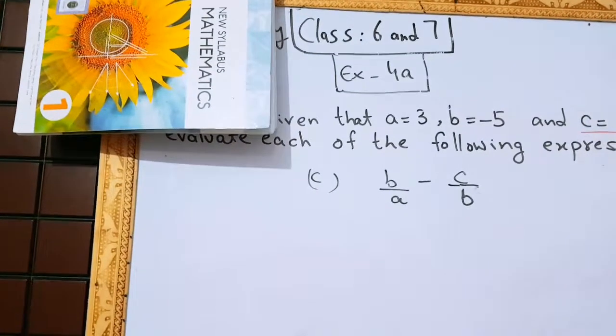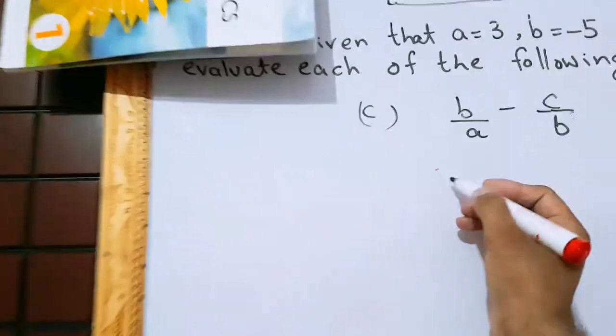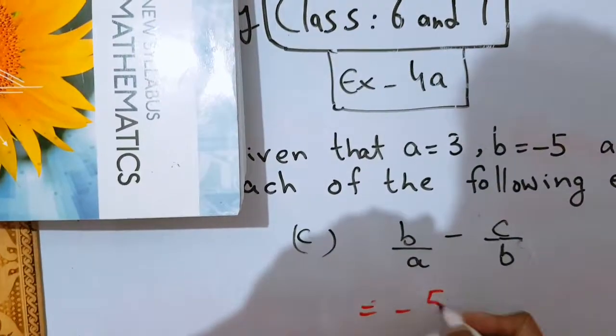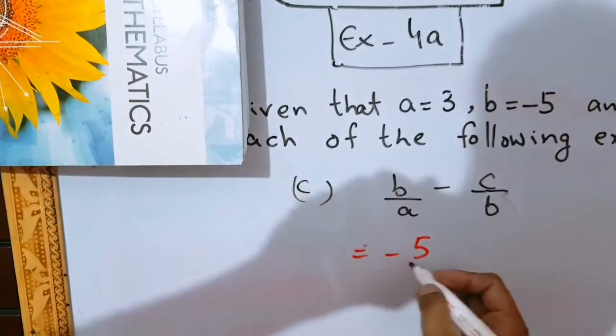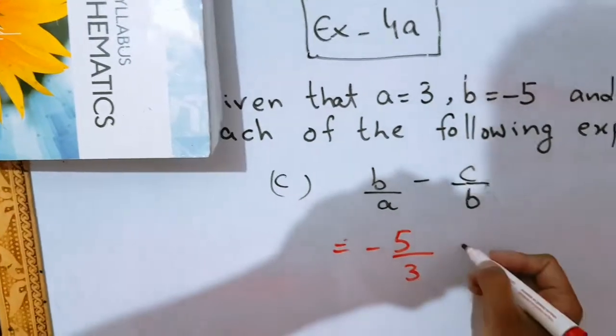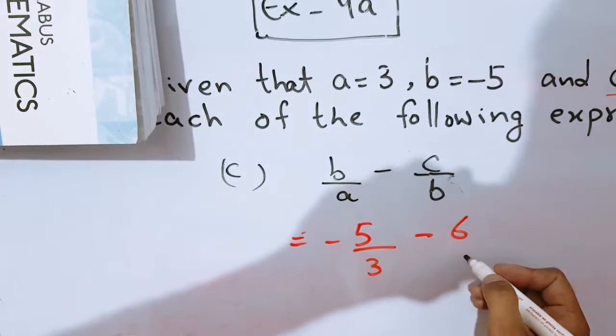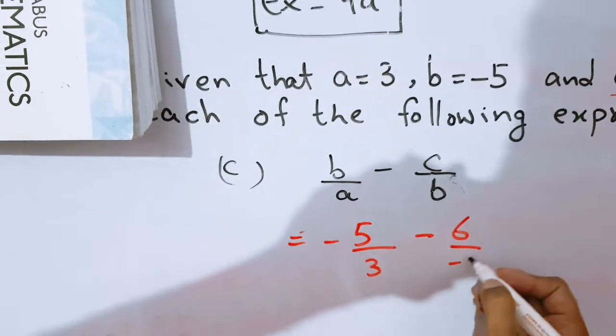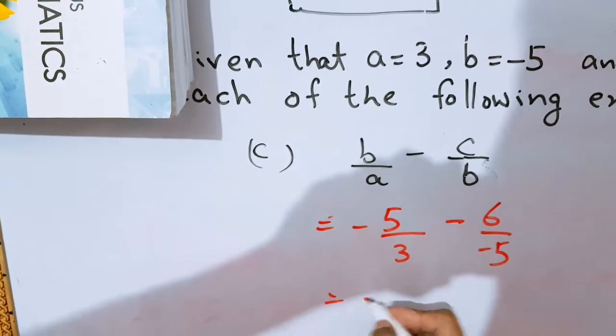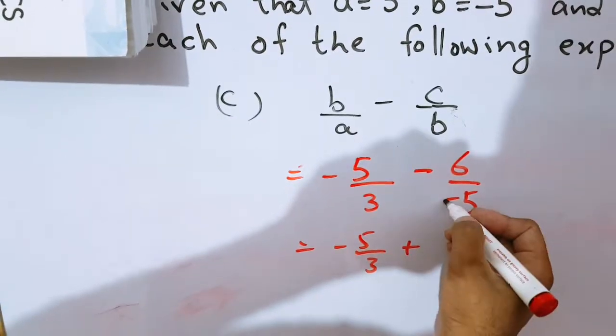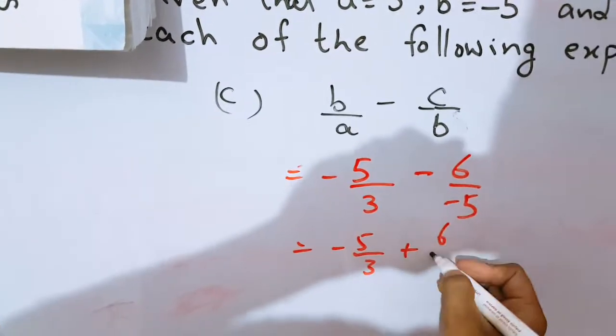Now let's do part c. In place of b, I shall write minus 5. And in place of a, I shall write 3. In place of c, I shall write 6. And in place of b, I shall write minus 5. Minus 5 over 3. Minus, minus, plus, minus, and minus, plus. 6 over 5.